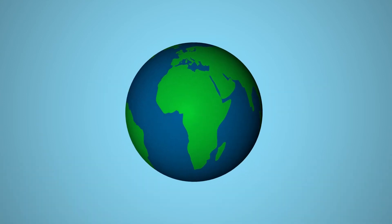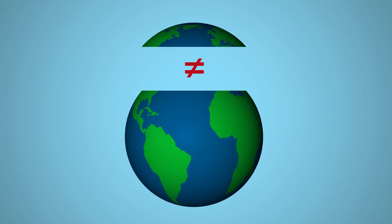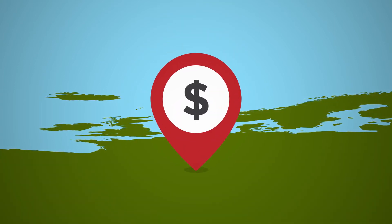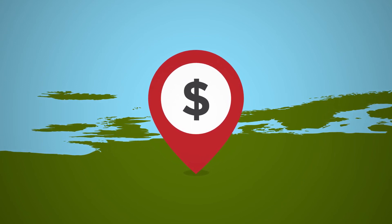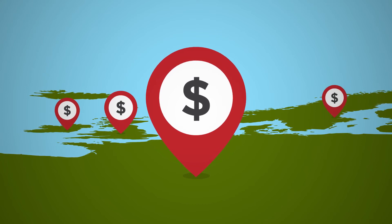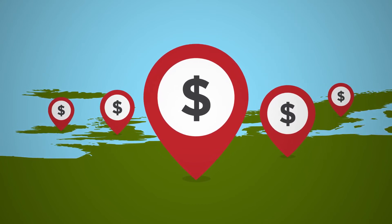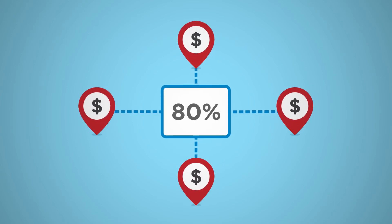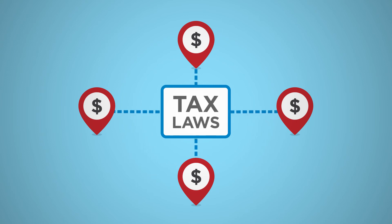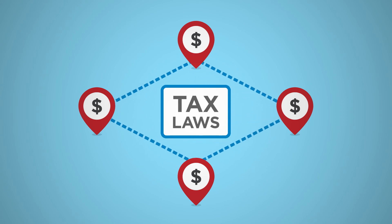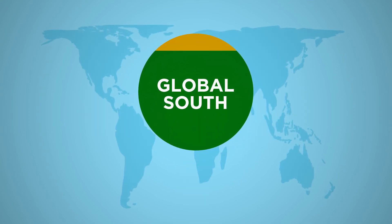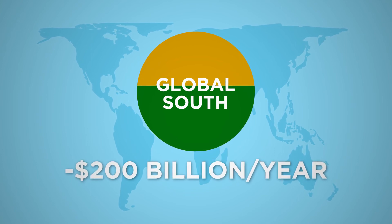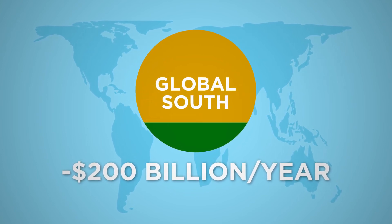Tax laws also influence inequality between countries. Not long ago, one company's economic activity tended to happen in the same place. But now, companies have many international branches and trade across borders. Approximately 80% of international trade takes place between the international branches of corporations that are actually trading with themselves. Our tax laws weren't designed to deal with this, and some companies take advantage of them to avoid paying tax. As a result, countries in the global south are being shortchanged for as much as $200 billion a year that could otherwise go to public services.